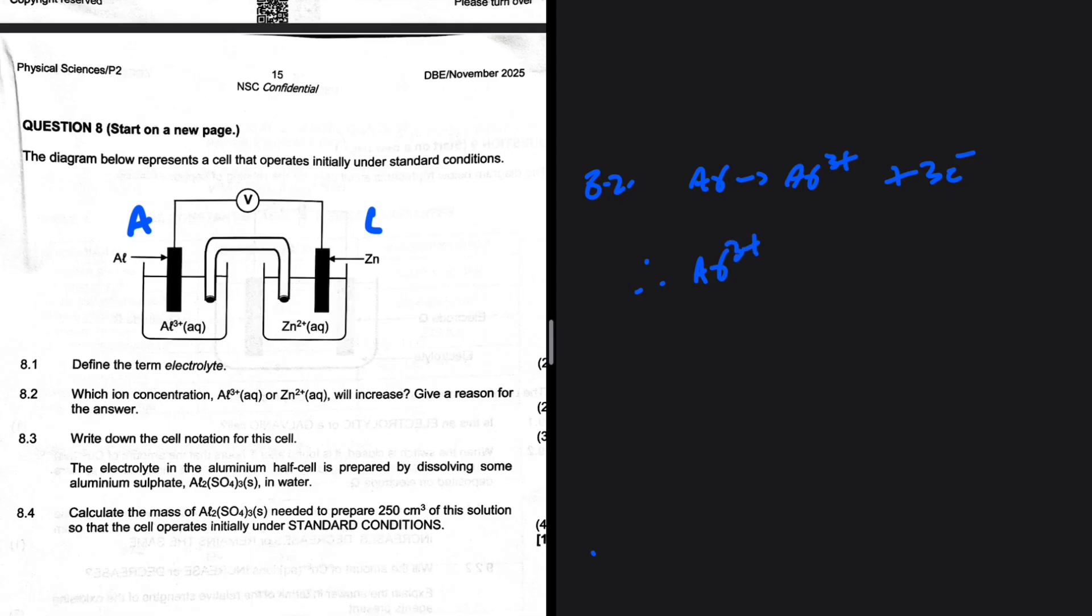Why is that the case? As oxidation is taking place, the concentration of Al³⁺ in the electrolyte will be increasing while the electrons migrate to the cathode through the voltmeter.